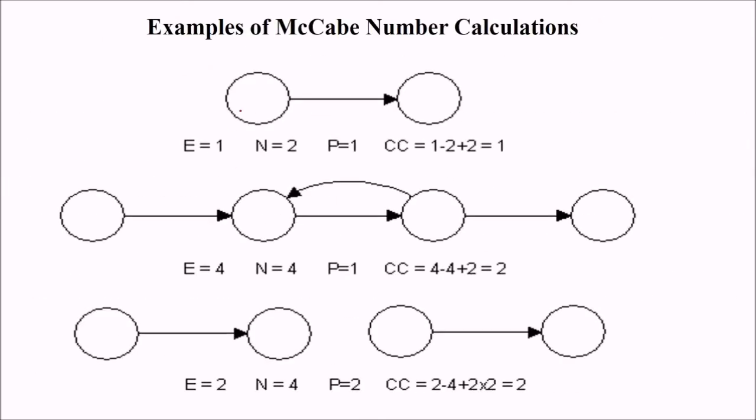Let us take one more example. How many E are there, edges? Only 1. Number of nodes? 1, 2. Predicate 1, there is no extra one. So how many are there? E minus N plus 2. We are applying this. So 1 minus 2 plus 2, that is 1.